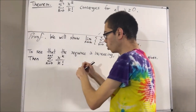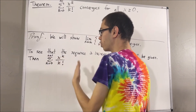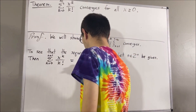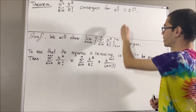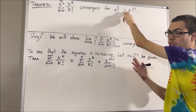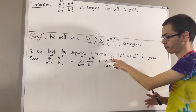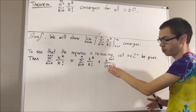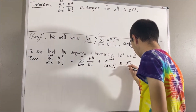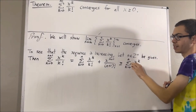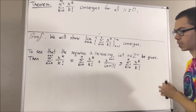We can pull away the n plus 1th term of this sum. So really, we have the sum from k equals 0 to n of x to the k over k factorial, plus x to the power of n plus 1 over n plus 1 factorial. This term is greater than or equal to 0, because since x is greater than or equal to 0, x to the power of any positive integer is also greater than or equal to 0. In particular, x to the power of n plus 1 is greater than or equal to 0. Divide that by a positive number, the result is still greater than or equal to 0. So since this term is greater than or equal to 0, this entire thing must be greater than or equal to the nth term of the sequence. This tells us that the sequence is increasing.